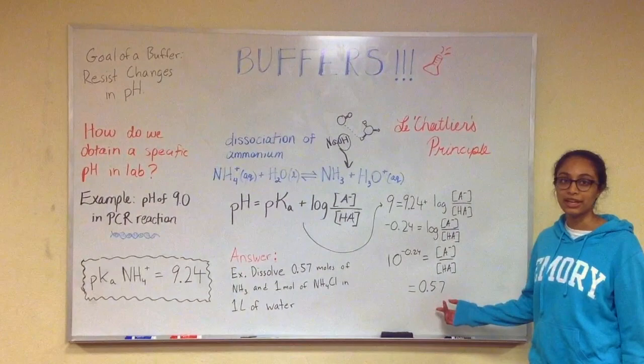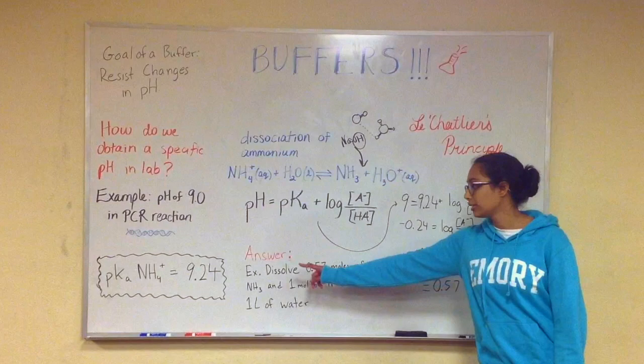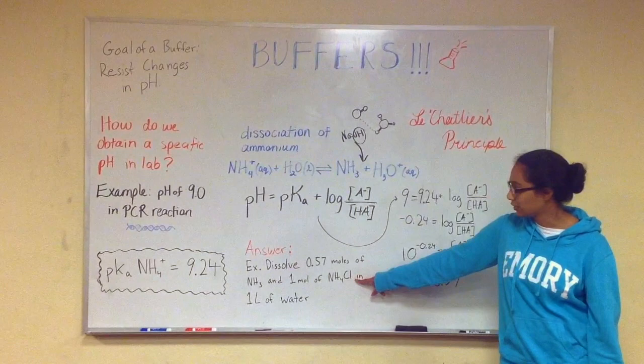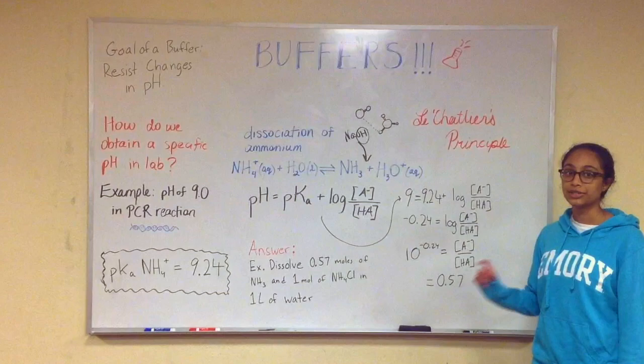And so to see how this number comes into play and actually create a specific pH in lab, we have an example. If we're trying to get this pH in solution, we could dissolve 0.57 moles of ammonia and one mole of NH4Cl. The chloride ion is a spectator ion, so it won't be involved in the reaction. So one mole of ammonium chloride in a liter of water. And so that way we have a ratio of concentrations that will give us this pH of 9.